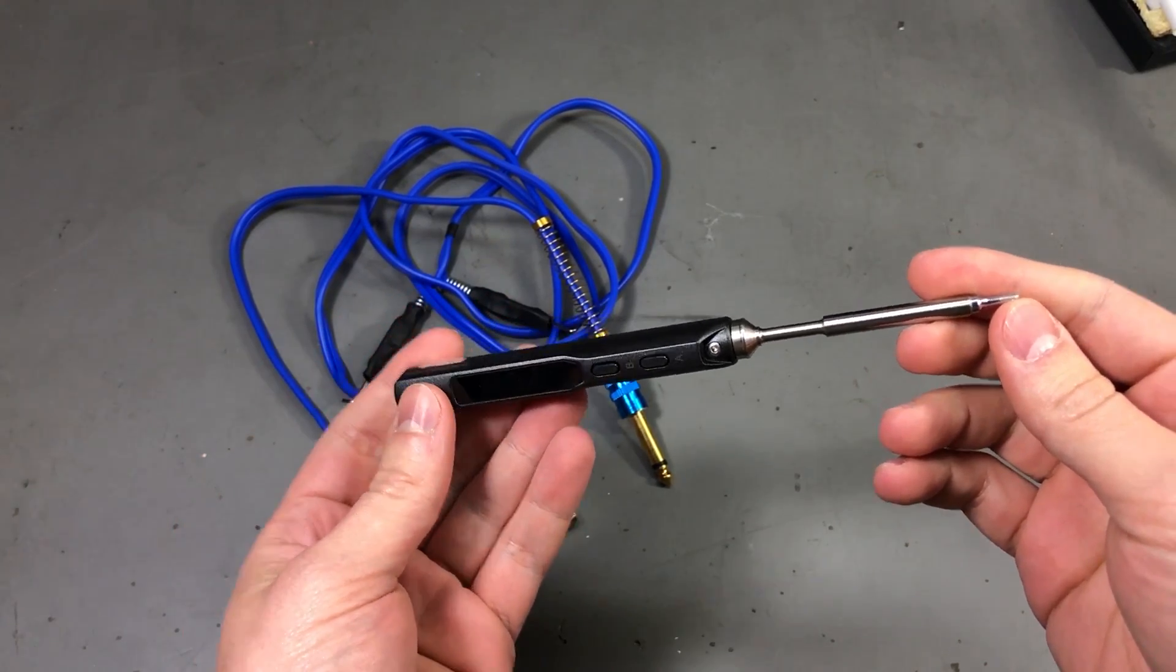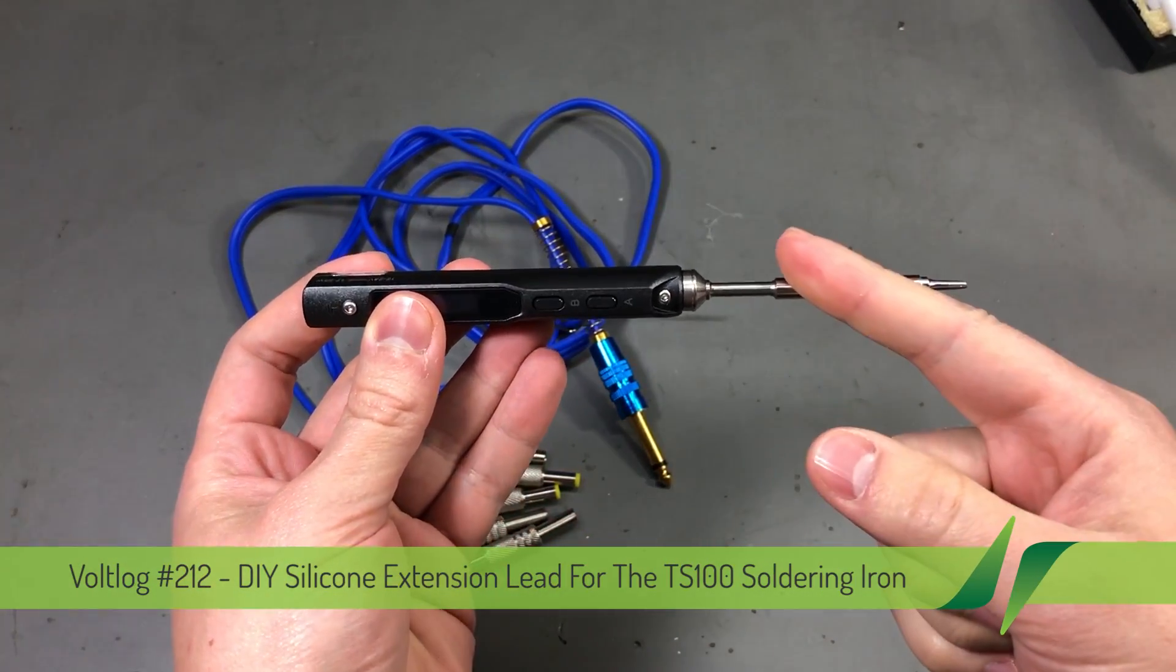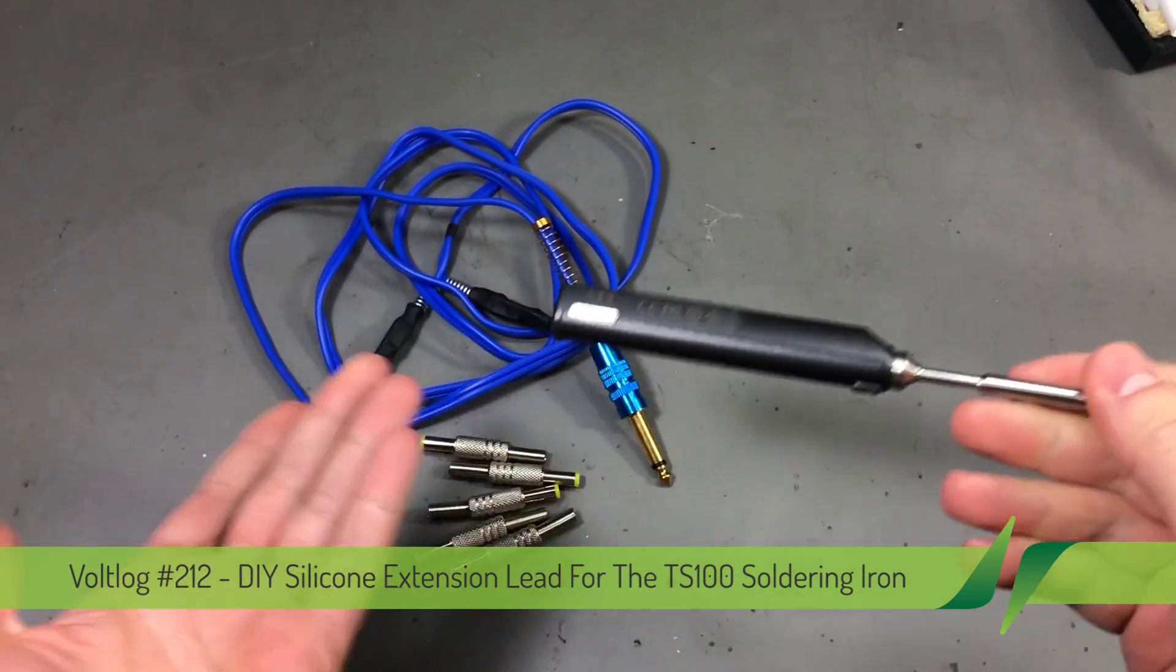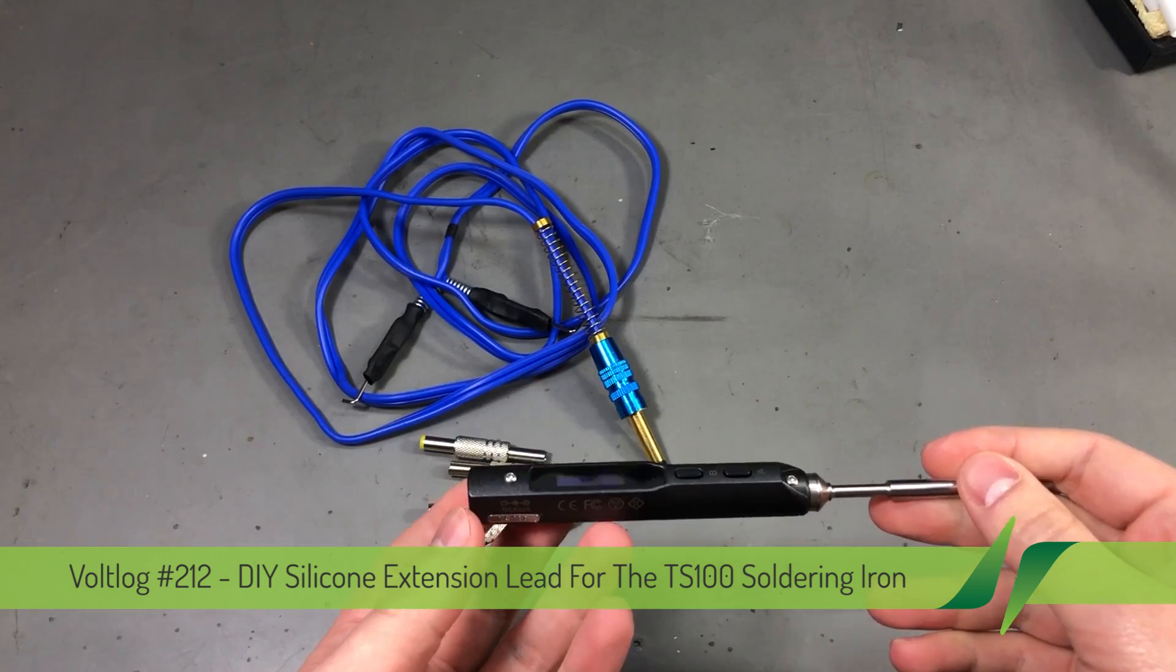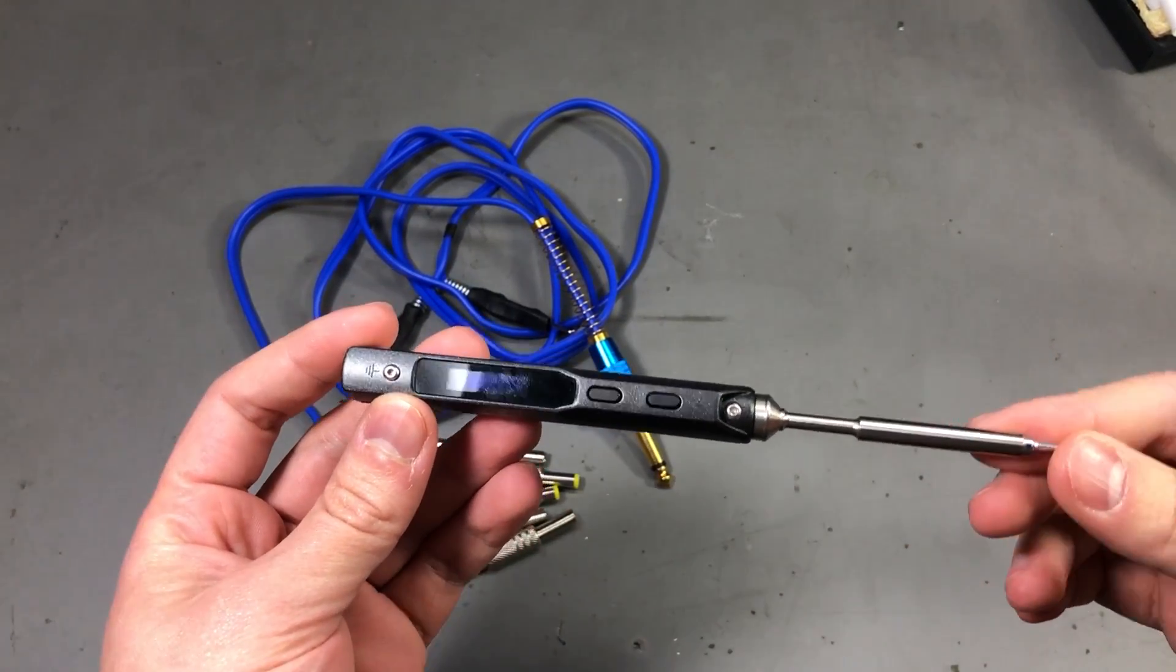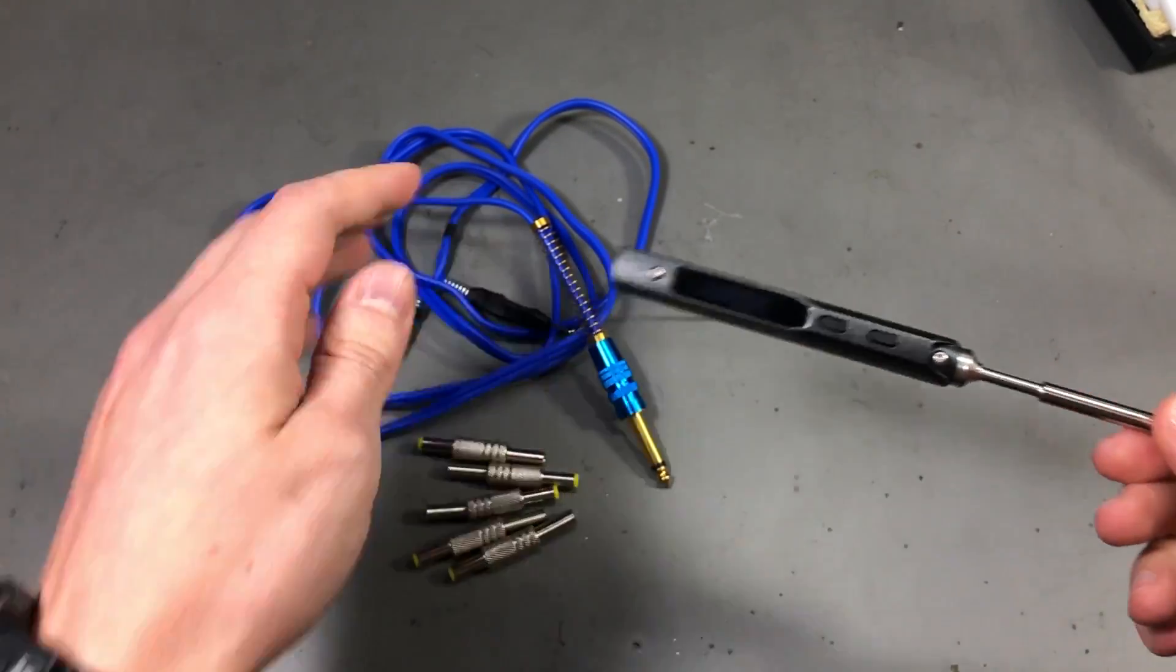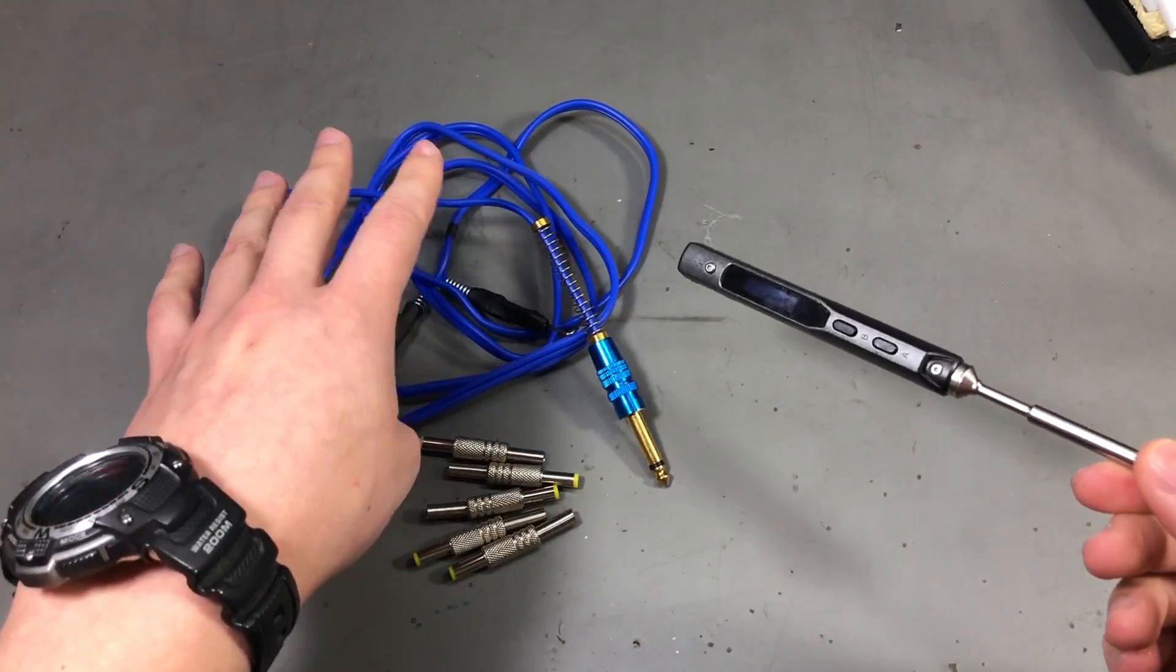Welcome to a new vlog. Today I'm making a nice flexible extension lead for my TS100 soldering iron. Now I know many of you might not be interested watching me build such a simple extension lead, but I think you could at least get a good tip on where to get this type of silicon cable.